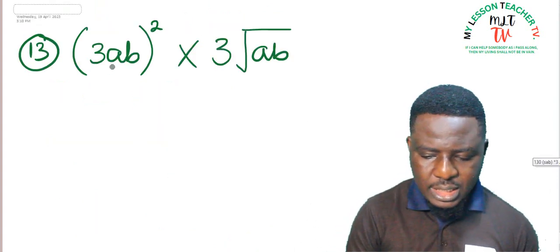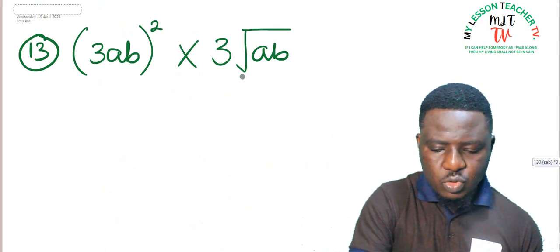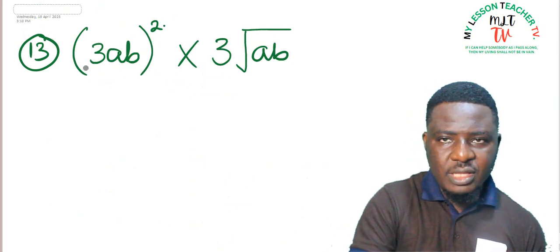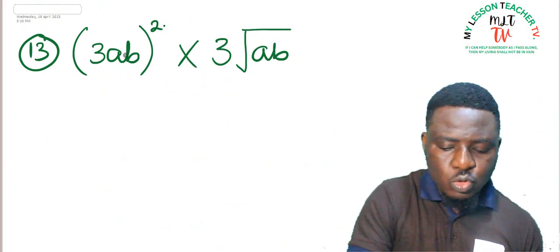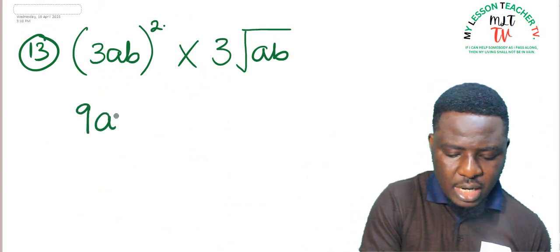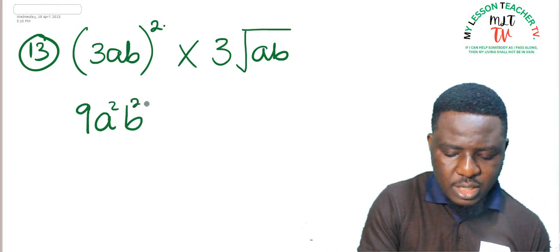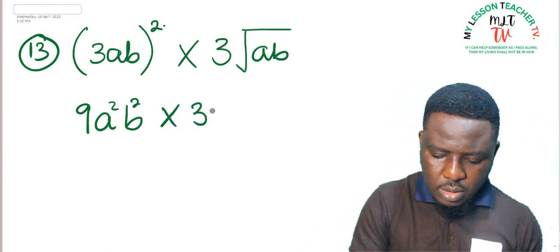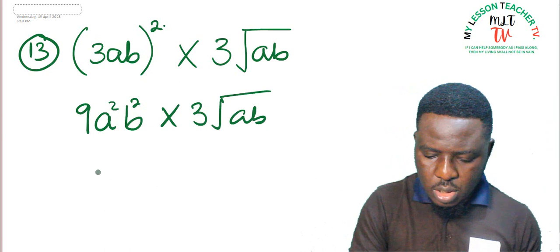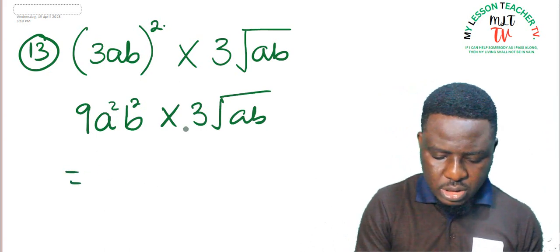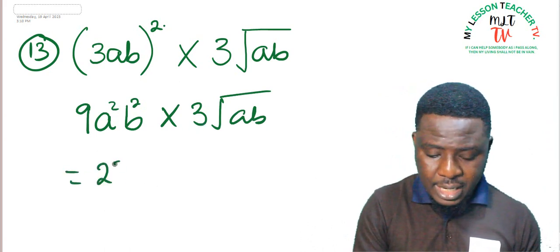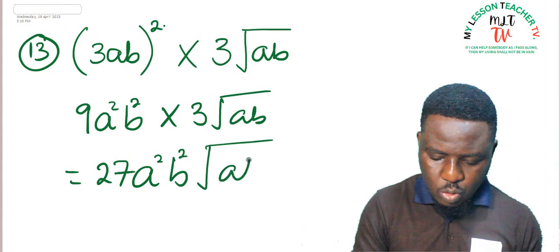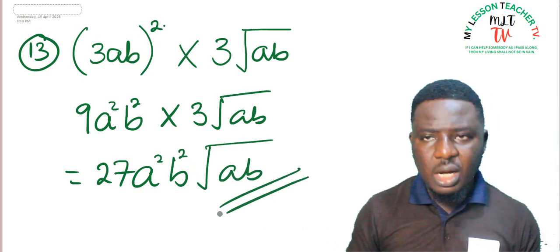Question 13: (3ab)² times 3 root (ab). The square affects every term in the brackets: 3² = 9, a² and b². This is equivalent to 3ab times 3ab, then times 3 root (ab). Multiply: 3 times 9 = 27. So this becomes 27 a² b² root (ab) as the answer.